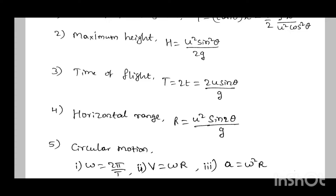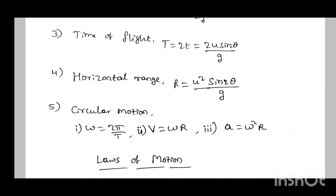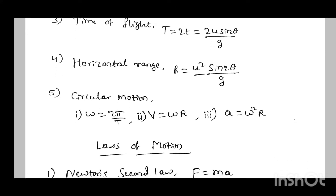Horizontal range R equal to u squared sine 2 theta divided by g. Next is circular motion. The formulas are: omega equal to 2 pi by T; linear velocity v equal to omega into r; and acceleration a equal to omega squared r.